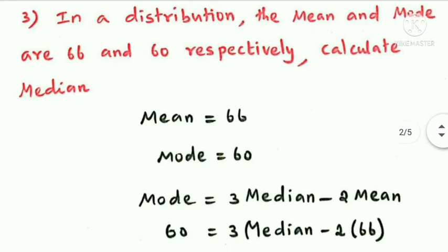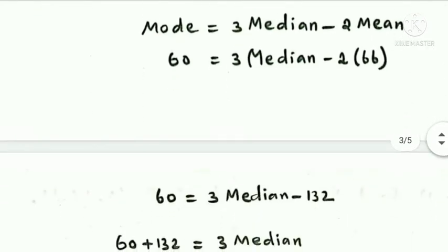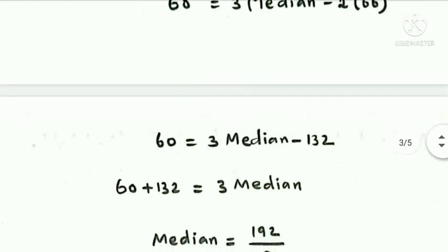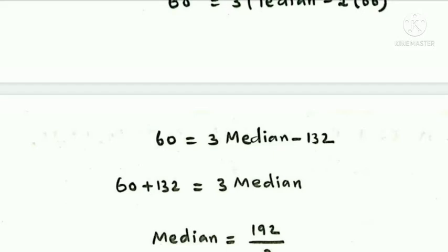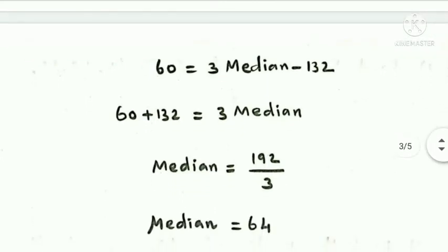Using the formula with mode = 60 and mean = 66: 60 = 3 Median − 2 × 66, so 60 = 3 Median − 132. Therefore 60 + 132 = 3 Median, giving 3 Median = 192. Median = 192 ÷ 3 = 64.